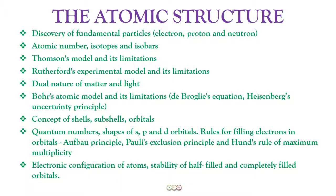The concept of shells, subshells, orbitals in an atom, the quantum numbers, the shapes of s, p, and d orbitals, rules for filling electrons in orbitals like Aufbau principle, Pauli's exclusion principle, Hund's rule of maximum multiplicity. And then you would be able to write the electronic configuration of atoms. You will be able to explain the stability of half-filled and completely filled orbitals after you have learned all these things in this course.